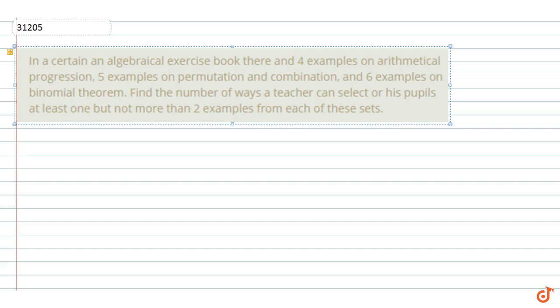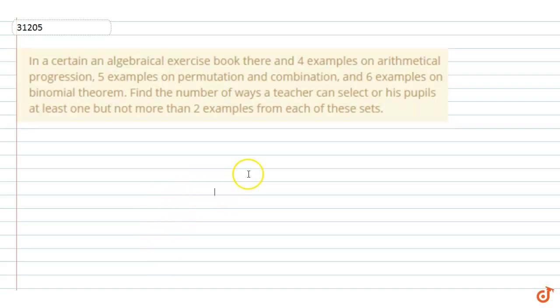In a certain algebraical exercise book there are four examples on arithmetic progression, five examples on permutation and combination, and six examples on binomial theorem. Find the number of ways a teacher can select for his purpose at least one but not more than two examples from each of those sets.